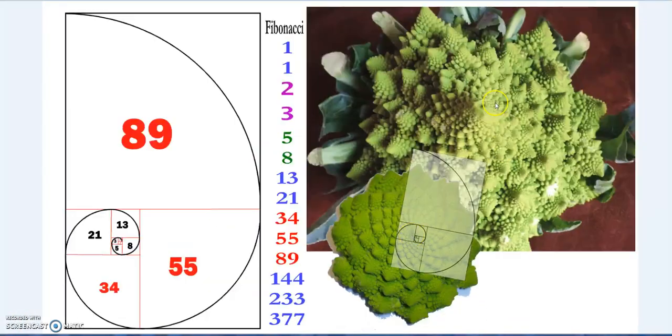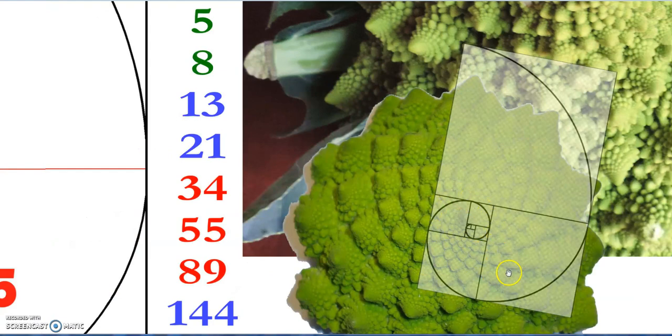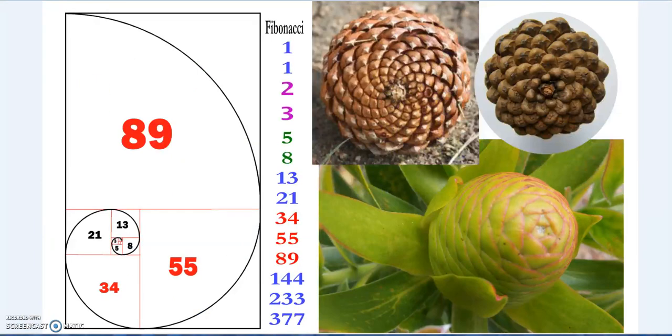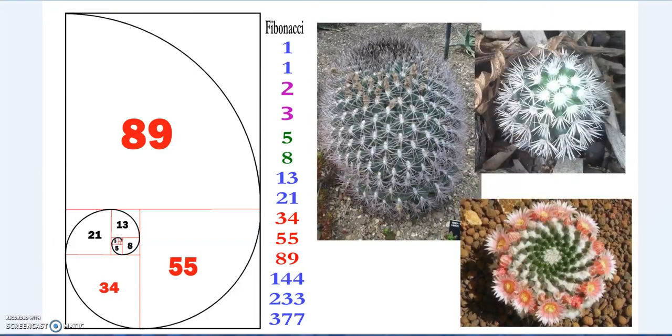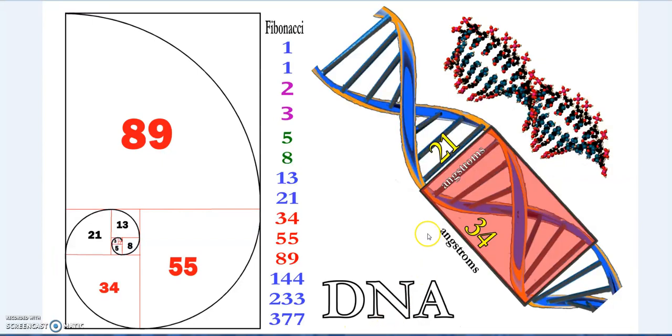When you get used to spotting these spirals, you'll see just how it really is everywhere. Pine cones and all these other sort of growths, you'll see it in cacti. If you follow these growth cycles, they're creating again this Fibonacci spiral, it just is.